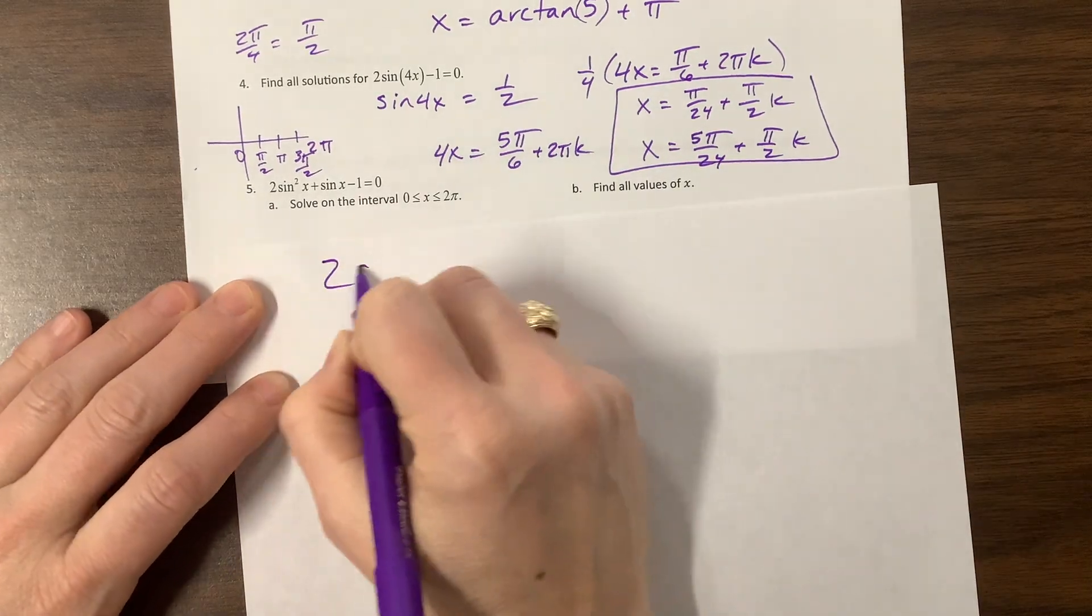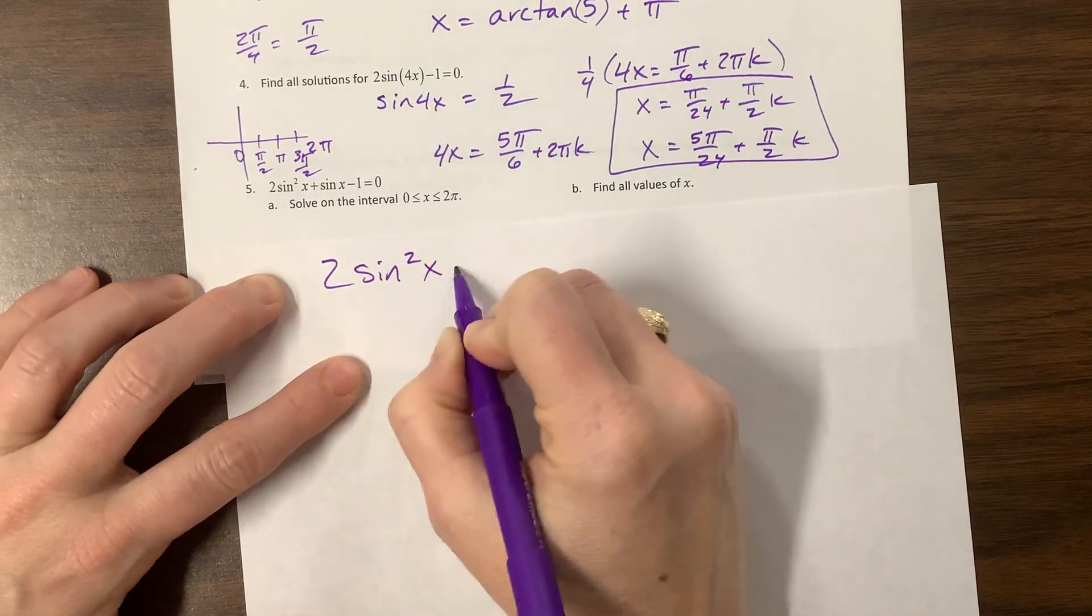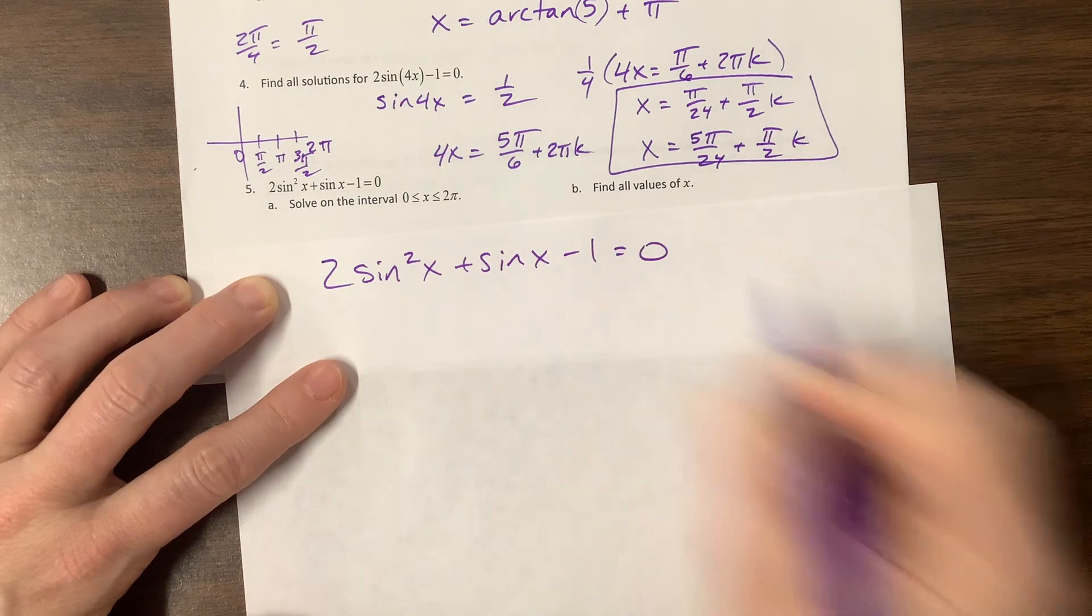Here we go. I have 2 sine squared x plus sine of x minus 1 equals 0.